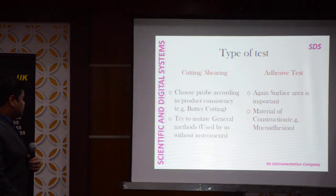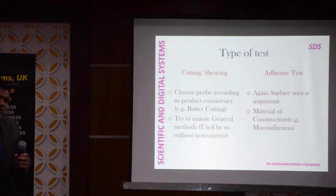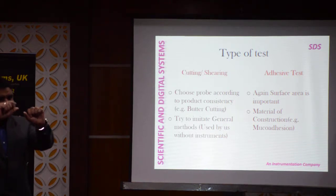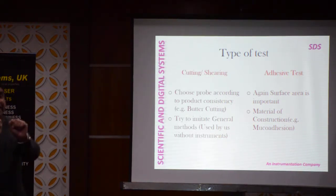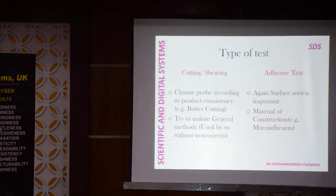The most important criteria of testing is to visualize how you are going to test it. For biscuit hardness or snapping force — how do you do it in general practice? You just take a biscuit and snap it. So you need something which imitates that action: pressing at a single point or bending it. That means you have to select a probe that performs a three-point bend test.